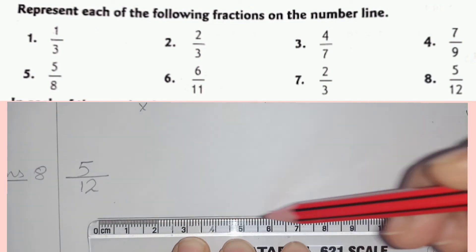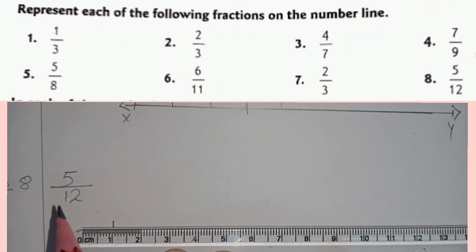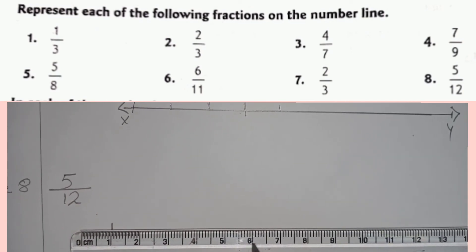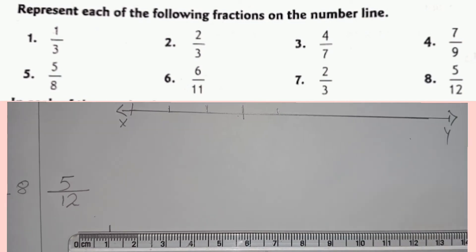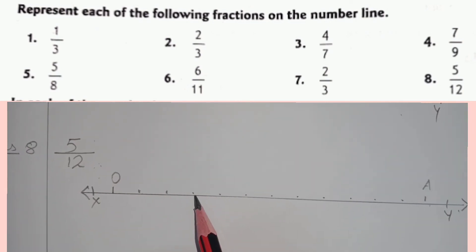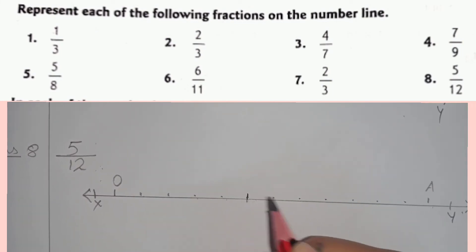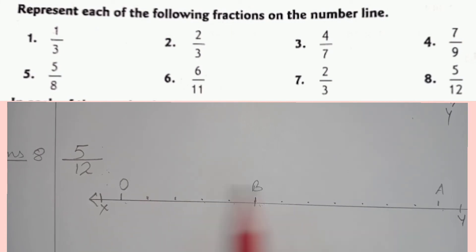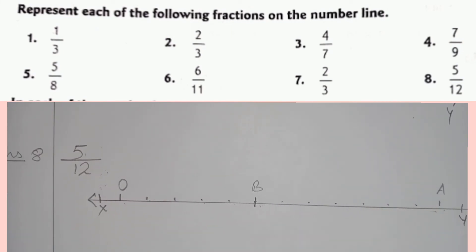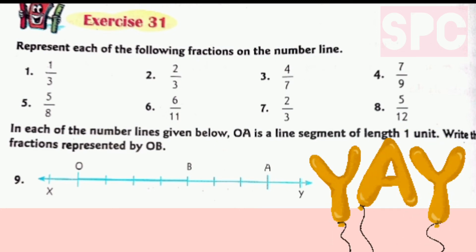Question number 8 is 5 by 12. Again, we will take a number line XY and on this number line, we will take two points O and A which will be 12 units apart. We will divide OA into 12 equal parts and out of 12 equal parts, we will consider 5 parts. At the end of the fifth part, this point will be marked as point B. Therefore, OB will represent the fraction 5 by 12 on this number line. So children, in this way we have done the first 8 questions, representing fractions on the number line.